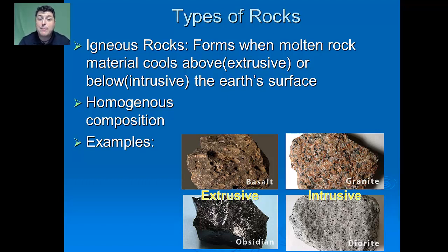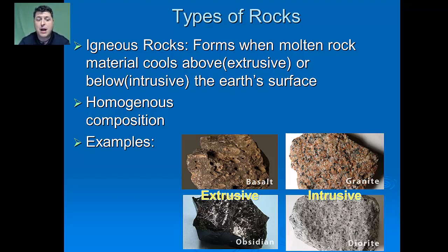Those that cool above the Earth's surface are called extrusive igneous rocks. As a result of more rapid cooling, they have much smaller crystals and a more homogeneous composition. Examples of extrusive igneous rocks include basalt and obsidian, whereas examples of intrusive igneous rocks include granite and diorite.